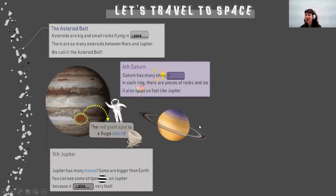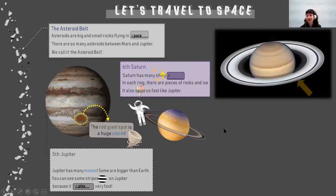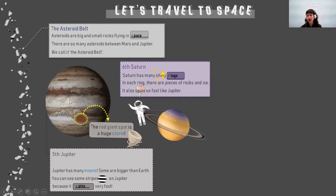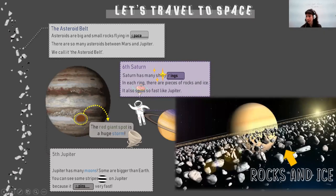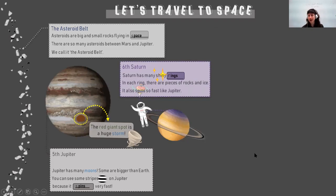Our next planet is Saturn. So what are these on the edge here? Do you know what these are called? Very shiny rings. They are called rings. In each ring, there are rocks and ice, and it spins fast like Jupiter. So these are the rings. When you see closely, it's all rocks and ice.